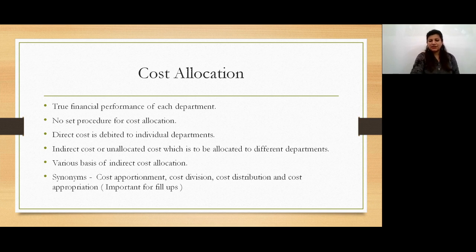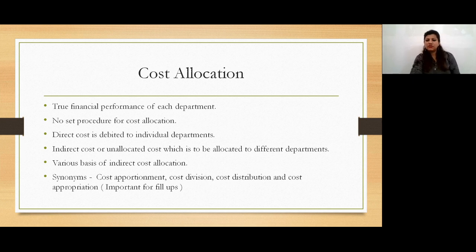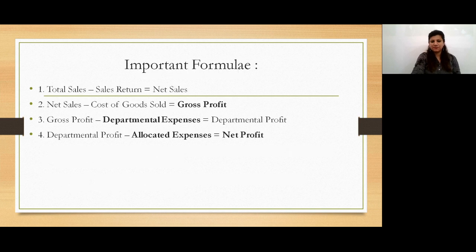Cost allocation is basically the process to distribute direct and indirect cost among different departments of an organization or a hotel. Direct costs are directly debited from individual departments, and it is the indirect cost or unallocated cost which is to be allocated to different departments.